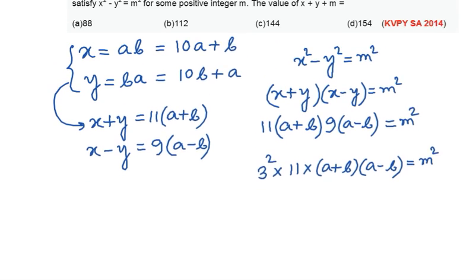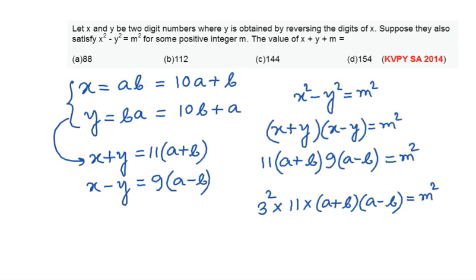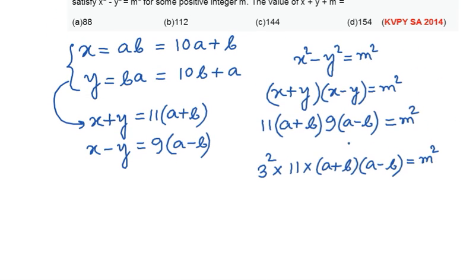Logically you can see that 3² is a perfect square. So we need to make sure that these 3 quantities on multiplying should give me a perfect square.